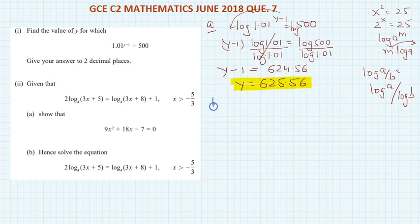Part b: Given that 2 log base 4 of 3x plus 5, so this 2 I can take it here, this 1 I can bring to this side, so what can I write it as: log base 4 of 3x plus 5 squared minus log base 4 of 3x plus 8 is equal to 1.